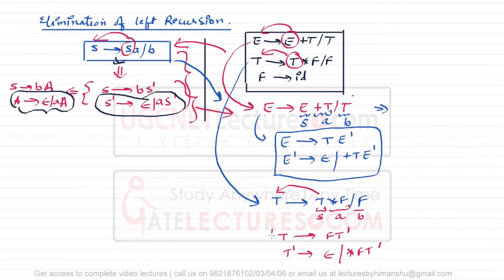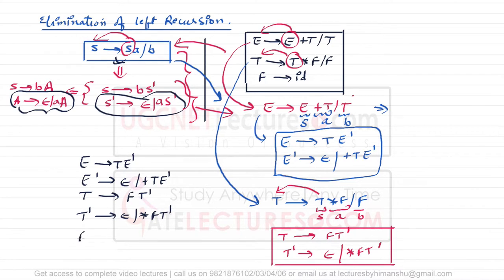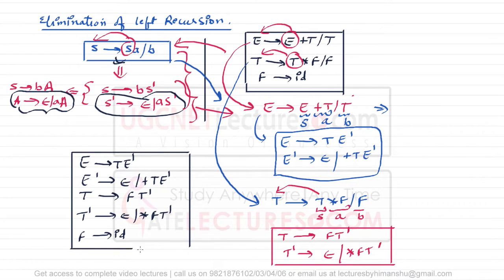Therefore the new grammar after eliminating left recursion is: E derives T E', E' derives epsilon slash plus T E', T derives F T', T' derives epsilon slash star F T', and F derives id. The F derives id production has no left recursion, so it remains unchanged.